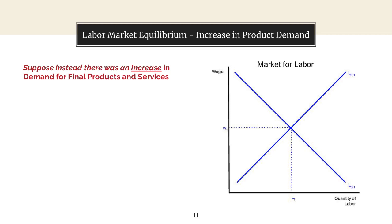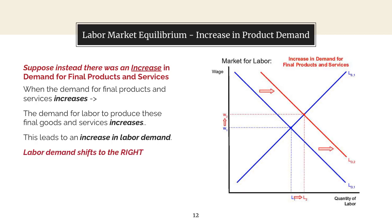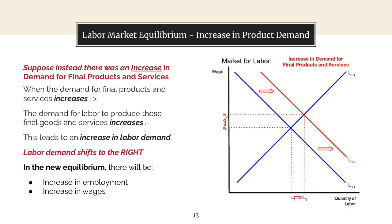Let's look at what happens if instead there is an increase in demand for final products and services. When demand for final products and services increases, the demand for labor to produce those things increases. We have an increase in labor demand and therefore the labor demand curve shifts to the right. Looking at our new equilibrium, we have an increase in wages and an increase in employment.